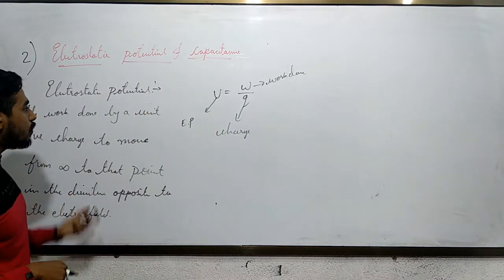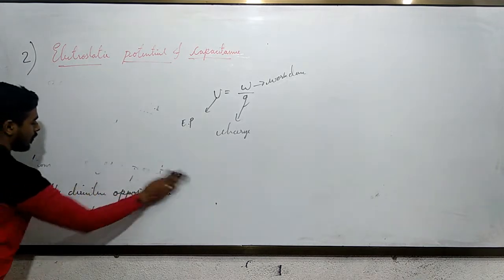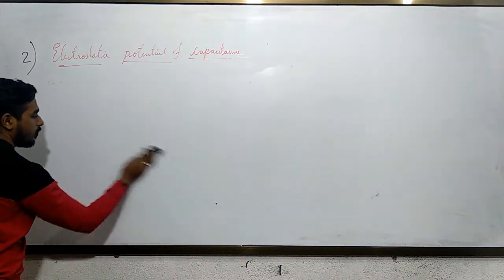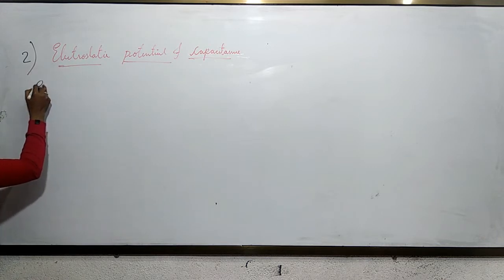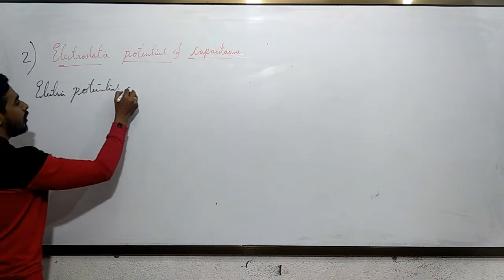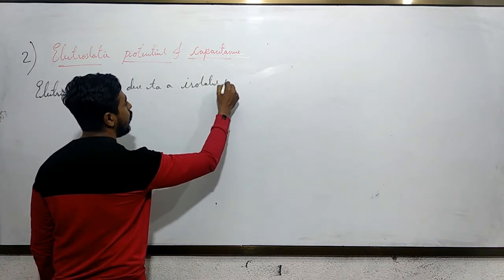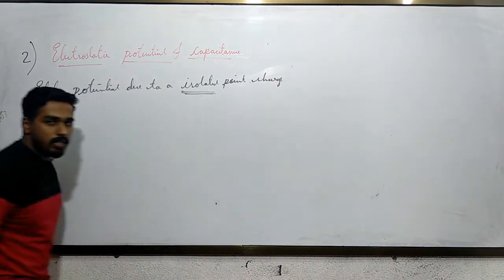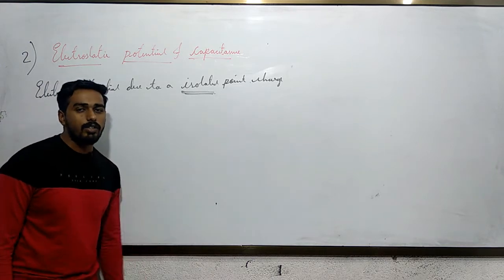Now let us go to the first derivation, which is very easy. The first derivation is electric potential due to an isolated point charge. 'Isolated' means which is alone or single — a single point charge is an isolated point charge.